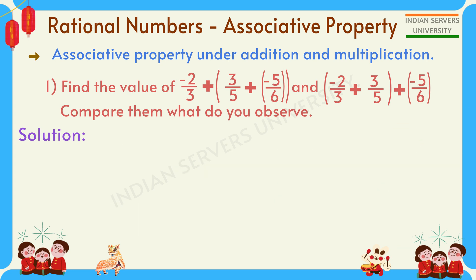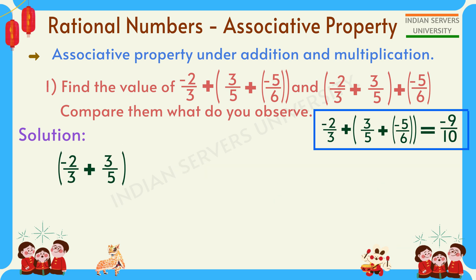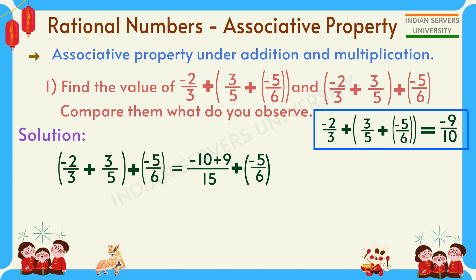Now for the second expression, -2/3 + (3/5 + (-5/6)). Solve the bracket first: 5 × (-2) = -10, 3 × 3 = 9, denominator 5 × 3 = 15. Plus (-5/6). So we get -10 + 9 = -1, giving -1/15 + (-5/6).